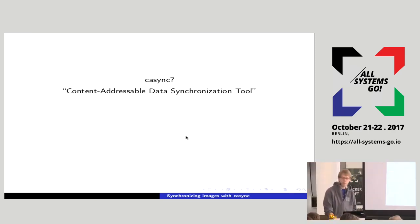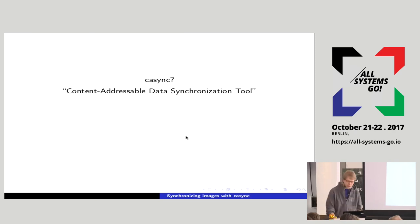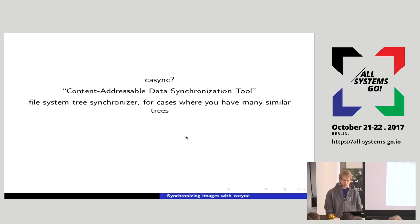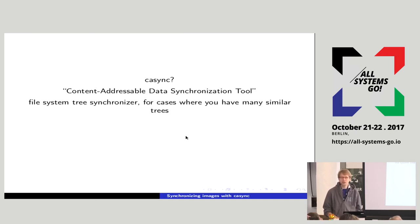CISync is just the combination of these two ideas: content addressable file systems and the R-Sync algorithm. It's a content addressable data synchronization tool, a file system tree synchronizer. It's basically supposed to speed up synchronizing file system trees if you have multiple of them and they are large but very similar.